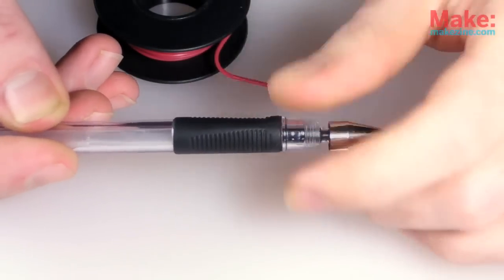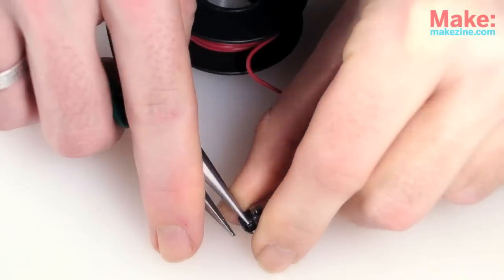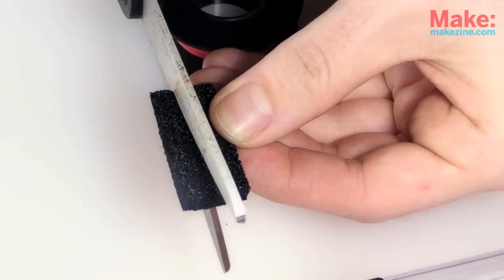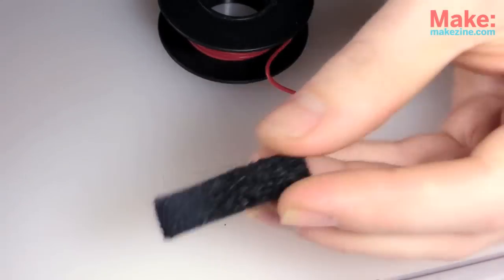I'll start by removing the pen's ink tip and tube, pop off that end cap as well, then cut a strip of foam a bit wider than the opening of the pen's barrel for a snug fit.